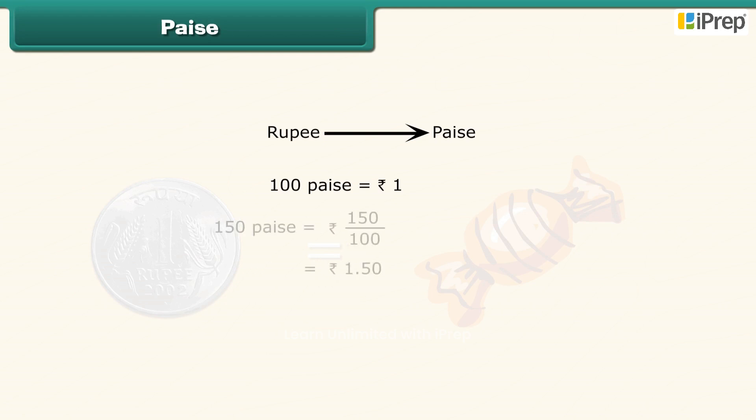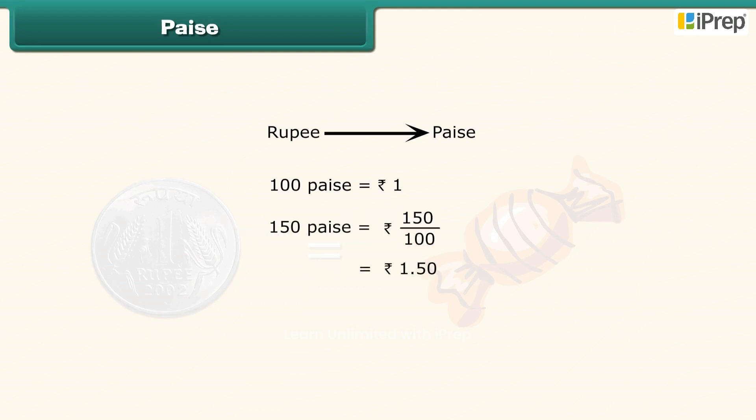Thus, 150 paise equals 150 upon 100 rupees. This makes 1.50 rupees.